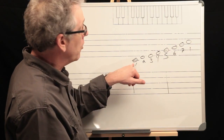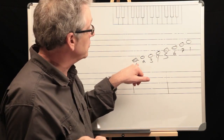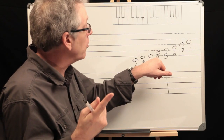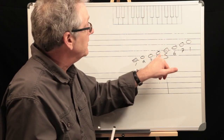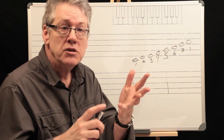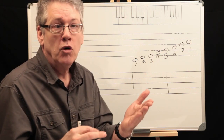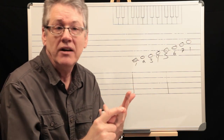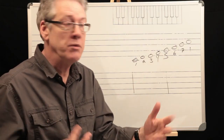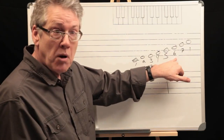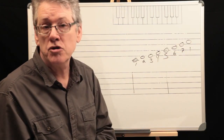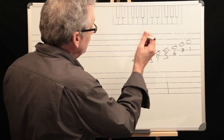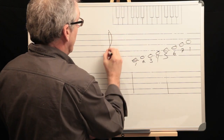In major: the one chord is always major, the two chord is always minor, the three chord is always minor, the four chord is major, the five chord is dominant — meaning it has a major third and a flat seven — the six is a minor chord, and the seven is a diminished chord. That's how it works in major.